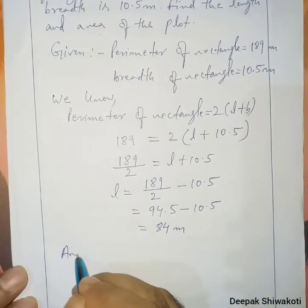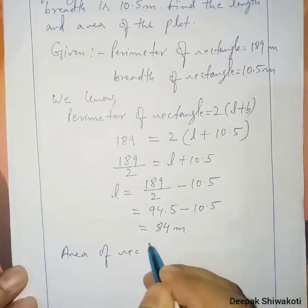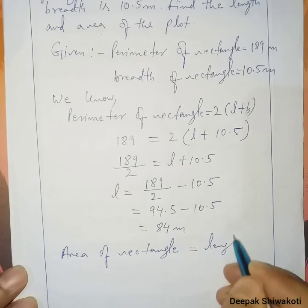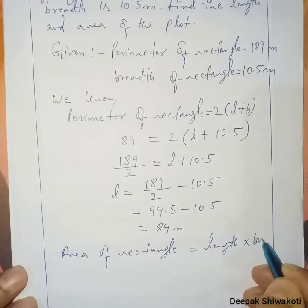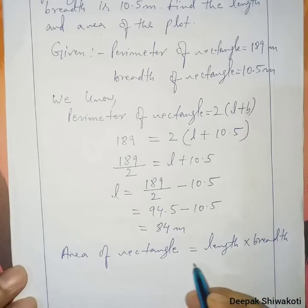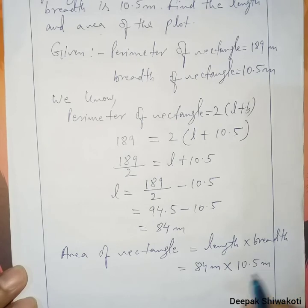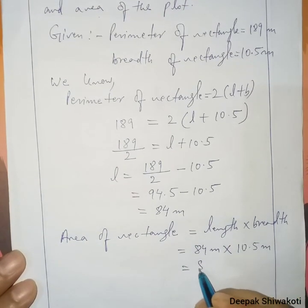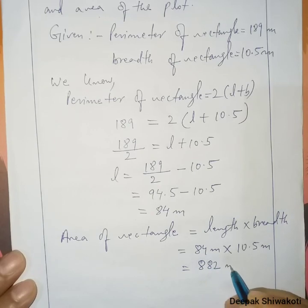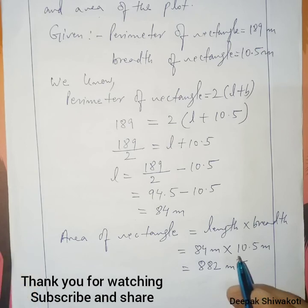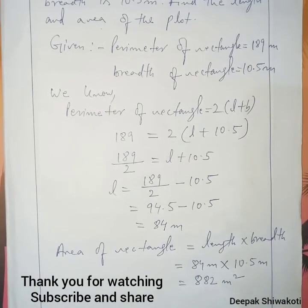Now we have to find the area also. Area of rectangle is equal to length into breadth. Length is 84 meter, which we just calculated, and breadth is given as 10.5 meter. When we multiply, we get 882 meter square. This multiplication work is for you. Thank you very much.